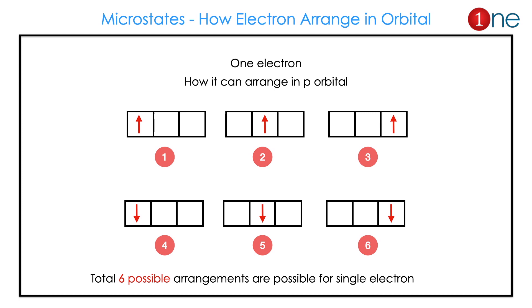Suppose you have one electron and you have a p orbital. There are six ways to arrange it — px, py, and pz each have an up spin as well as a lower spin. So totally six possible arrangements. That is what microstates are really about.